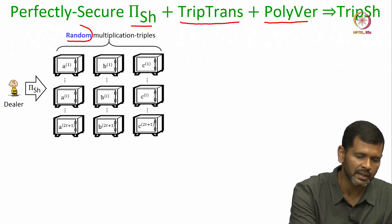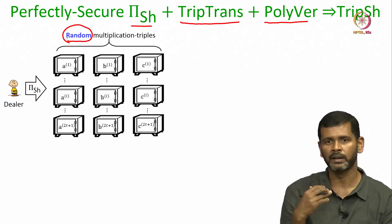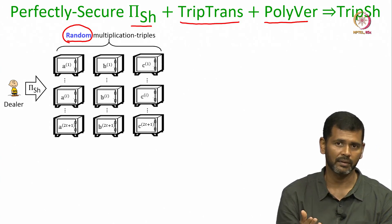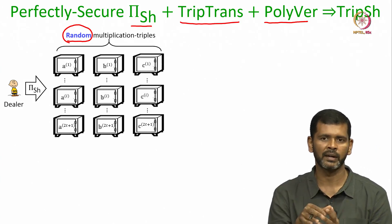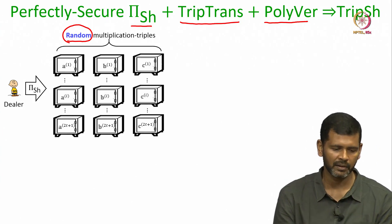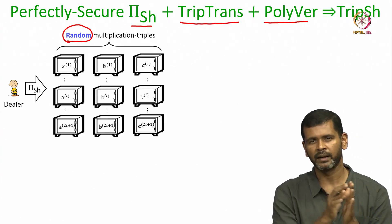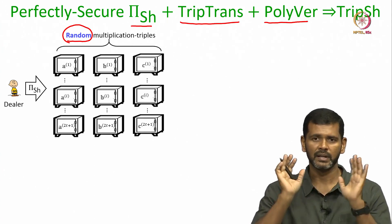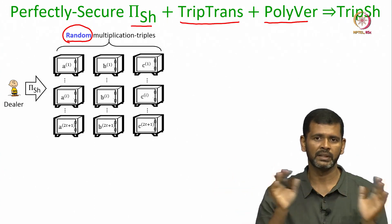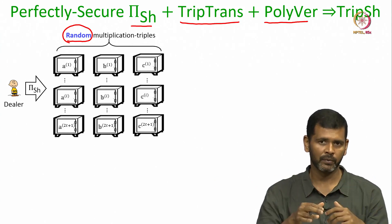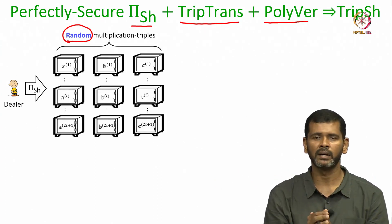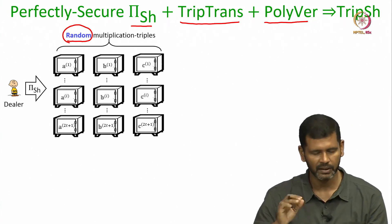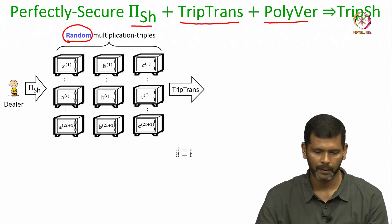If the dealer is honest, each of the triplets is indeed a multiplication triplet, but if the dealer is corrupt that need not be the case. So we have to incorporate our verification mechanism once the dealer has secret shared its triplets. Once the dealer has secret shared its triplets, it is done — it cannot change its mind. Now the parties have to verify whether the dealer has indeed secret shared multiplication triplets.